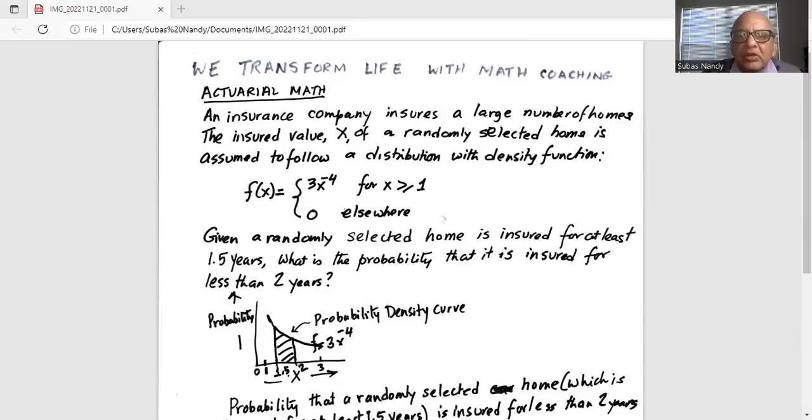An insurance company insures a large number of homes. The insured value x of a randomly selected home is assumed to follow a distribution with density function f of x is equal to 3 multiplied by x exponent minus 4 for x greater equal to 1 and f of x equal to 0 elsewhere.